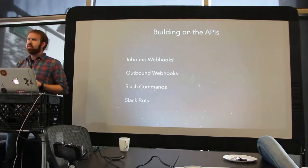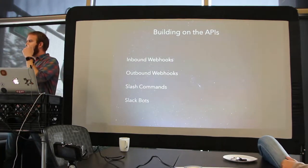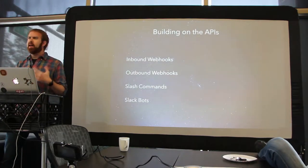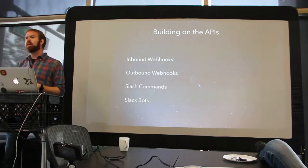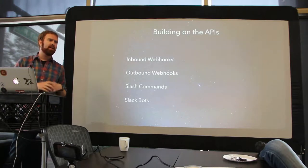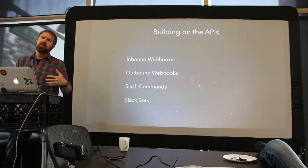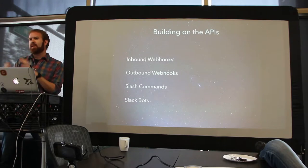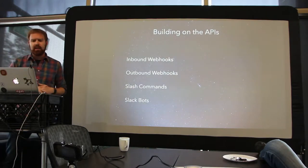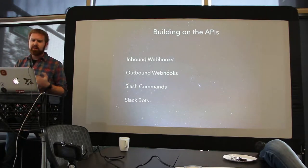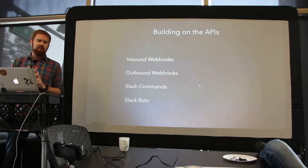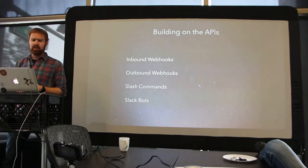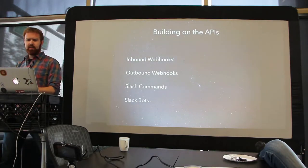I'm going to cover a couple of options because not everything needs to be a bot. When you're building something on Slack, it's important to think: do I want a bot, or do I just want something where people can do something like slash Uber order me a ride? The options are inbound webhooks, outbound webhooks, slash commands, and Slack bots. We'll look at each of these in depth.